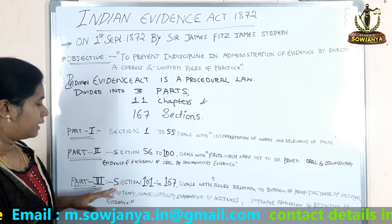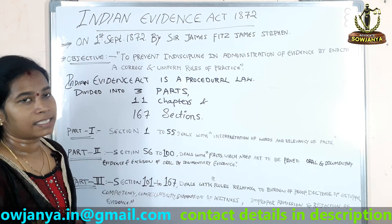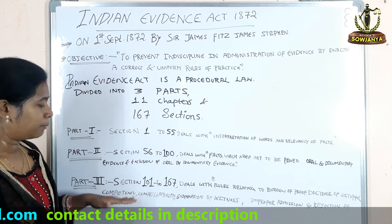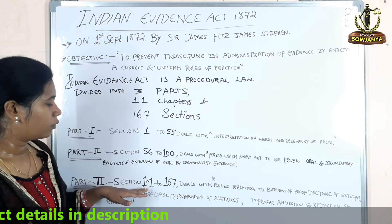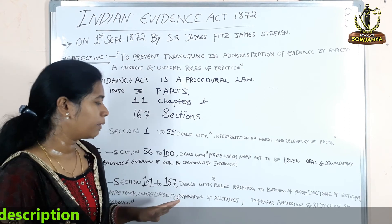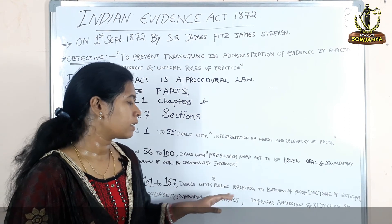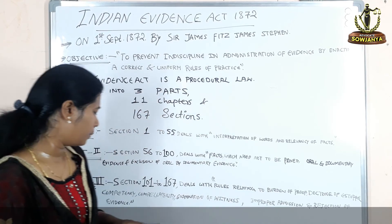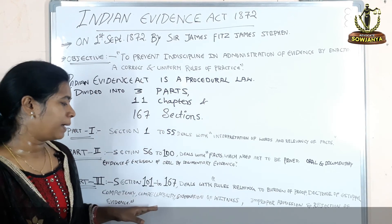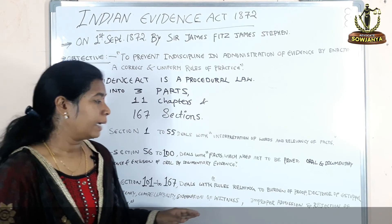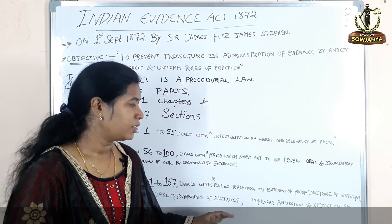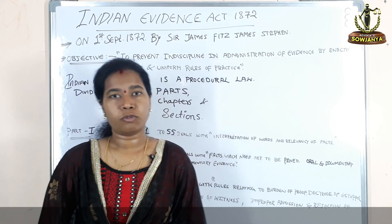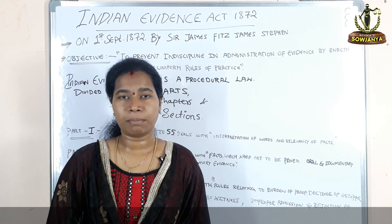Part 3 covers sections 101 to 167. It deals with rules relating to burden of proof, doctrine of estoppel, competency, examination of witness, and improper admission and rejection of evidence.